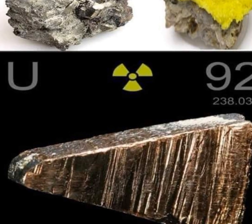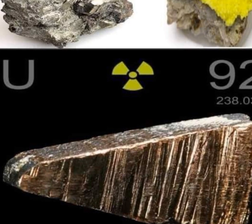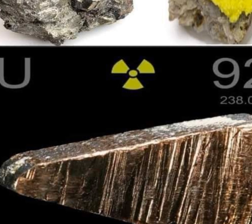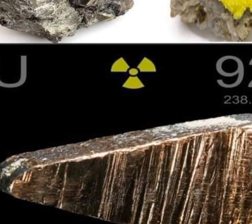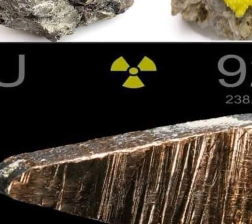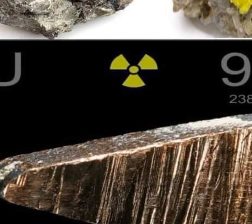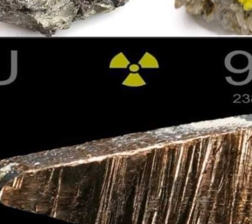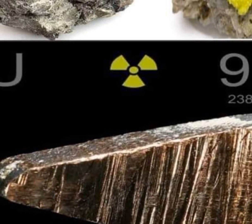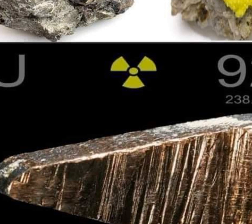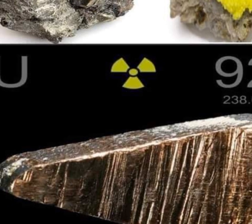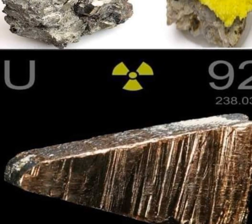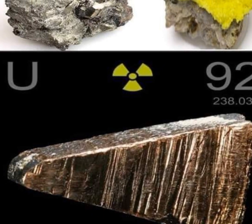Where is uranium found? Uranium is found in different quantities in nature in most rocks. It is concentrated in igneous rocks, soil, rocks, and water. The world produces 60 to 1,000 tons of uranium annually, more than 70% of which is exported from the mines of Kazakhstan, Canada, and Australia.